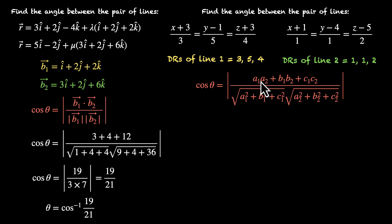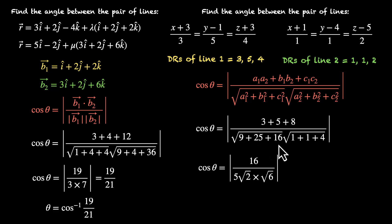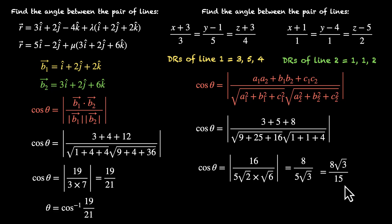Cos of theta equals (A1A2 + B1B2 + C1C2) / (√(A1² + B1² + C1²) × √(A2² + B2² + C2²)). The numerator is 3×1 + 5×1 + 4×2 = 3 + 5 + 8 = 16. The denominator is √(9 + 25 + 16) × √(1 + 1 + 4) = √50 × √6 = 5√2 × √6. Simplifying: 16 / (5√12) = 16 / (10√3) = 8/(5√3) = 8√3/15 after rationalizing. So theta = cos⁻¹(8√3/15).